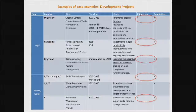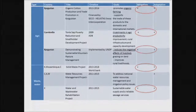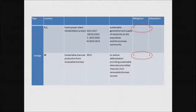One case in Kyrgyzstan is organic cotton production and trade promotion. The goal is organic farming, which contributes to both mitigation and adaptation aspects in agriculture. For waste and water, there is a solid waste project that also has positive contributions to both aspects. For energy, sustainable charcoal production from renewable energy has the goal of reducing deforestation and providing a sustainable alternative charcoal from renewable biomass sources, with both mitigation and adaptation contributions.